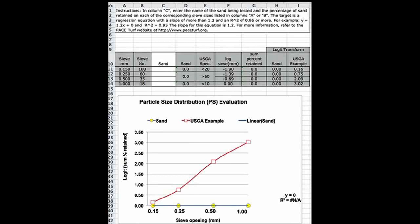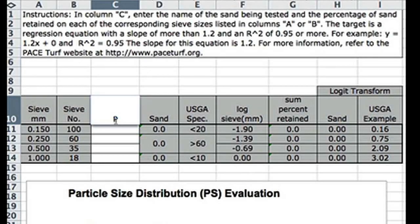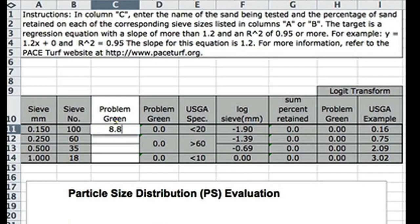When you first open the spreadsheet, you'll get a layout that looks like this one. There's a series of areas at the top where you can enter the data, particularly in this one area under sand. We'll put the name of the sand in there. In this case, let's start off with a problem green. Just as an example sand, it had 8.8.